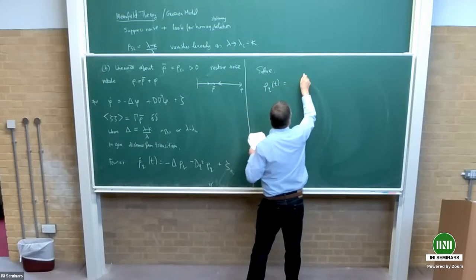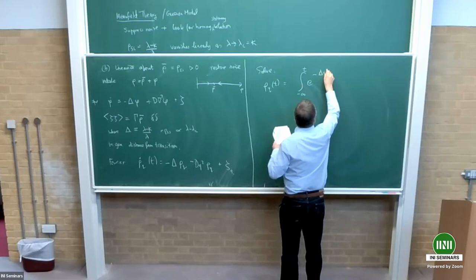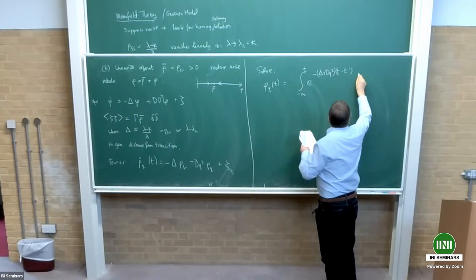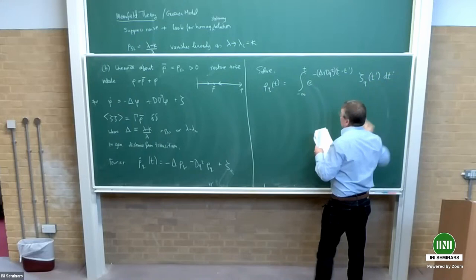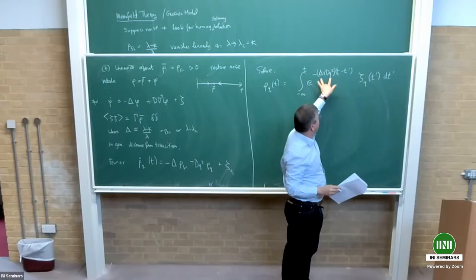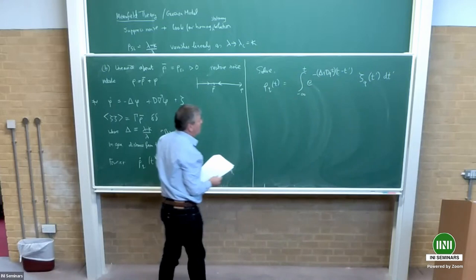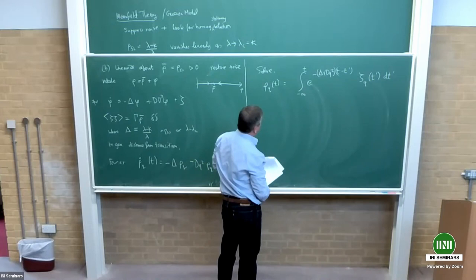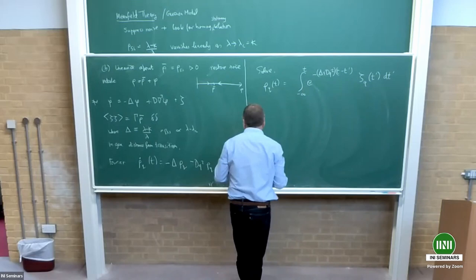The solution is rho_Q of T equals the integral from minus infinity to T of exp[minus(delta plus D Q squared)(T minus T prime)] times the noise. I can think of this as driving the system with random noise that decays with rate set by delta plus D Q squared, summed over the entire temporal history. Both sides are Gaussian distributed — that follows from the linearization. So I can calculate the covariance matrix.